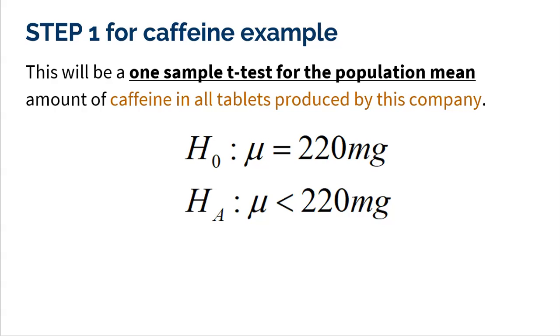So first, the null hypothesis is that the population mean is 220 milligrams. Everything is working fine and the machine is not broken at all. And the alternative is that the mean is less than 220 milligrams. And that means something's not working correct.